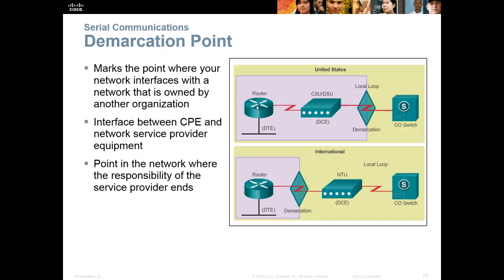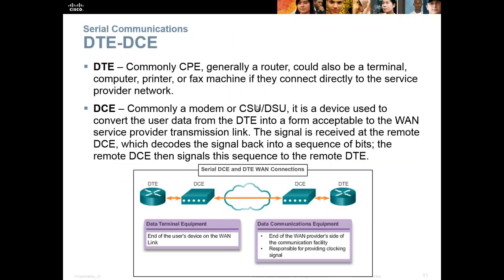Every serial cable has a DTE end and a DCE end. The T is for terminal, and the C is for control — I like to refer to it as clock. The DCE end has to provide the clock rate. Either your provider sends the clock rate to you and you're the DTE end, or if you're in the lab, one end of your cable is the DCE end and that sets the clock rate. With serial communication it happens one bit at a time, so somebody has to set the rate. In class we typically do 'clock rate 64000'.